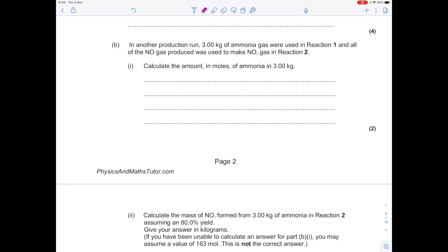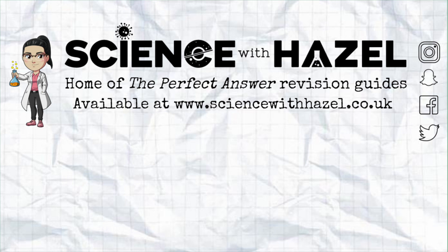In another production round, 3 kilos of ammonia gas were used in reaction 1 and all of the NO gas produced were used to make NO2 gas in reaction 2. Calculate the amount of moles of ammonia in 3 kilograms. So here's our mass, MR, number of moles. Number of moles is therefore mass, which is 3 kilos, which is therefore 3,000 grams. Make sure you convert, divided by the MR of ammonia, so that's NH3, so that's 176 moles, which are 3 significant figures.